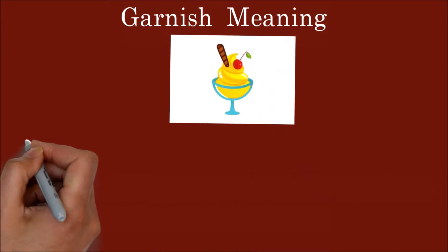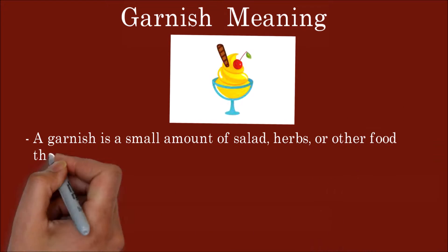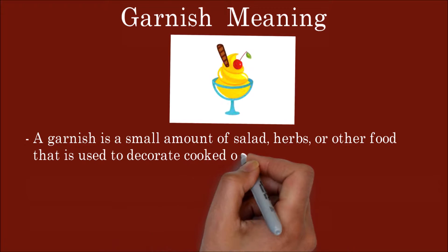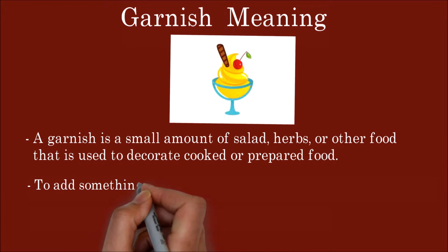Garnish. Meaning of garnish. A garnish is a small amount of salad, herbs, or other food that is used to decorate cooked or prepared food.